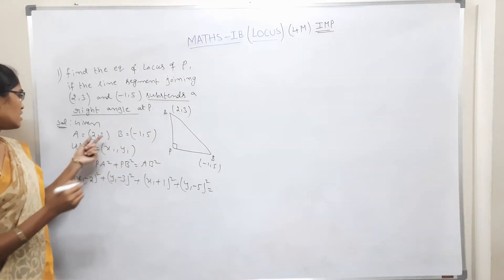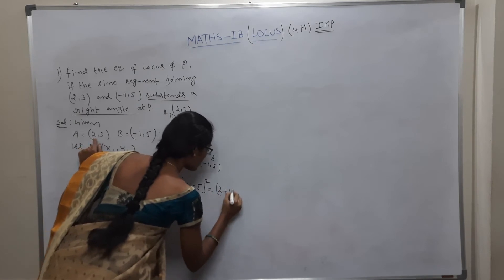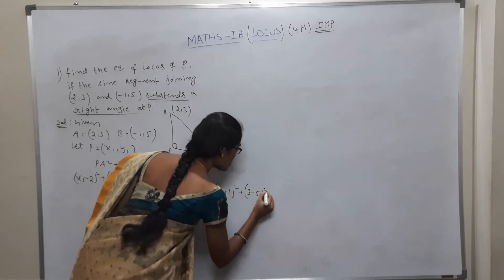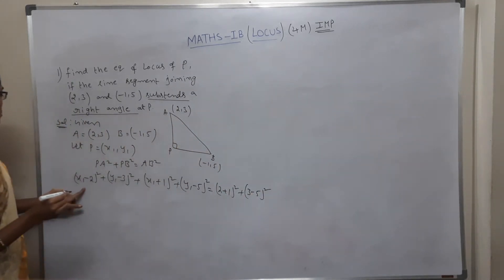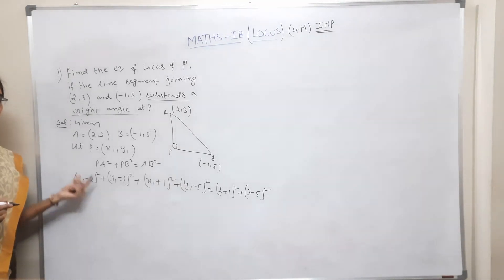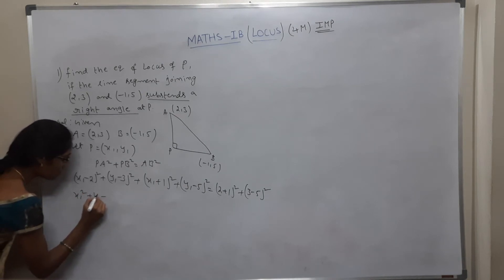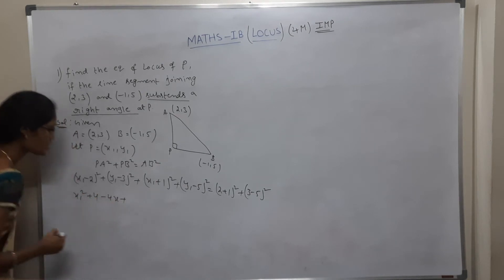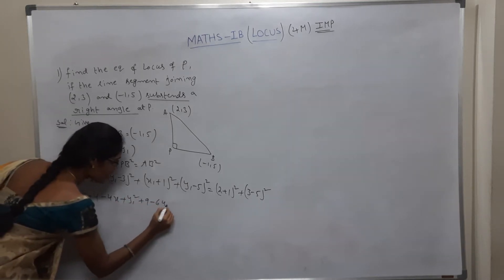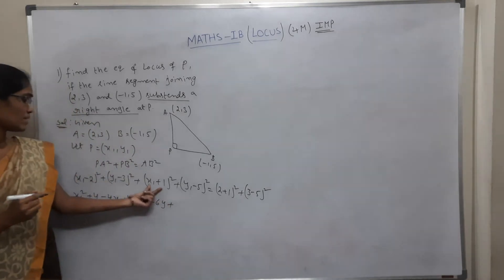AB² is the distance between A(2,3) and B(−1,5): AB² = (2+1)² + (3−5)². Now expanding using the (a−b)² formula — a²+b²−2ab: (x1−2)² = x1²+4−4x1, and (y1−3)² = y1²+9−6y1.